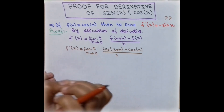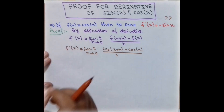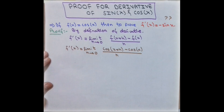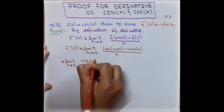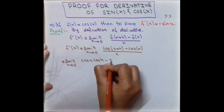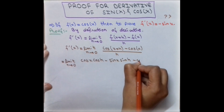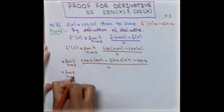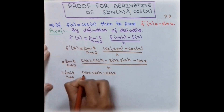We apply the cosine angle sum identity, which says cos(A+B) = cos(A)cos(B) minus sin(A)sin(B). Expanding, the limit as h approaches zero becomes [cos(x)cos(h) minus sin(x)sin(h) minus cos(x)] divided by h.